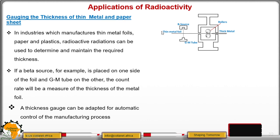As you pass the thin metal foil through, if it is very thin or if it is thick, the beta particles cannot pass — remember the penetrating power. So the counts give us the thickness of that metal foil, and that way you are able to maintain the required thickness.